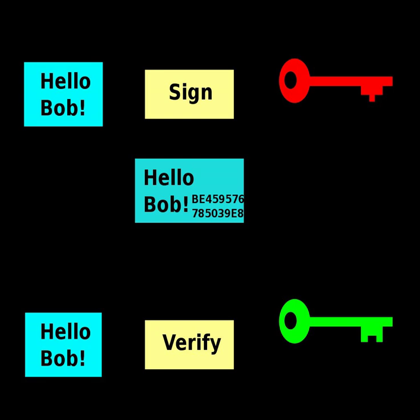A signing algorithm that, given a message and a private key, produces a signature. A signature-verifying algorithm that, given the message, public key and signature, either accepts or rejects the message's claim to authenticity. Two main properties are required.